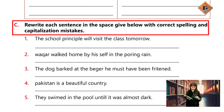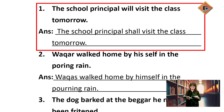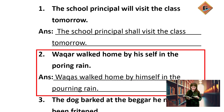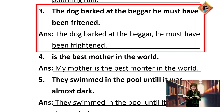Now rewrite each sentence in the space given below with the correct spelling and capitalization. 'The school principal will visit the class tomorrow.' Now Waqar ka W capital hoga: 'Waqar walked home by himself, not his self, in the pouring rain' — pouring ke spelling thik honge.